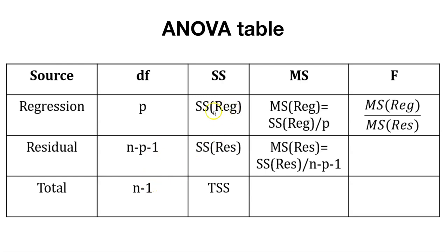We have regression sums of squares and residual sums of squares, and we can add them up to get the total sum of squares. We can calculate the mean square for the regression and the mean square for the residuals by taking the sums of squares and dividing them by the degrees of freedom. Our important value that will denote significance is the F value, which we calculate by taking the regression mean square and dividing it by the residual mean square. This is very similar to what we did with simple linear regression.